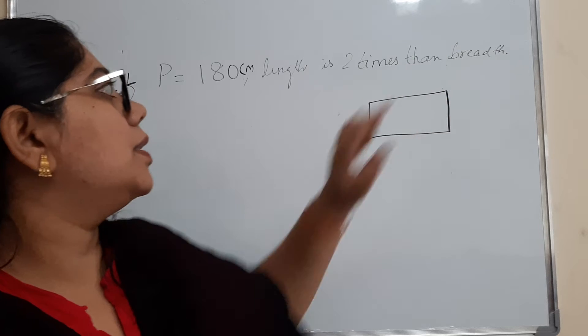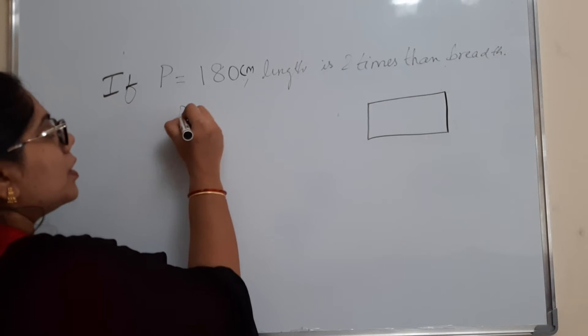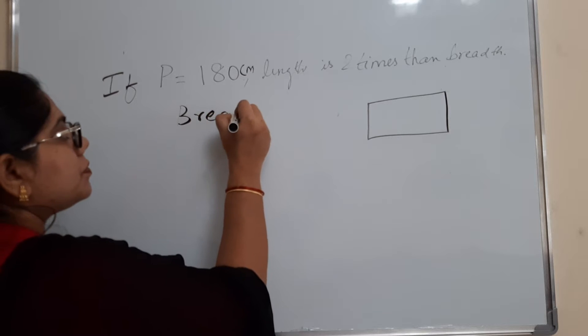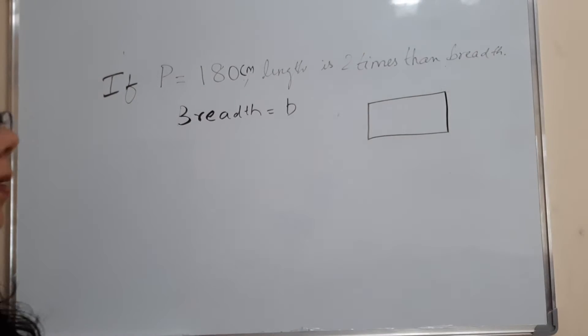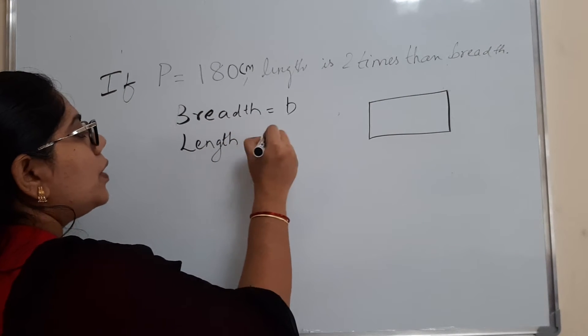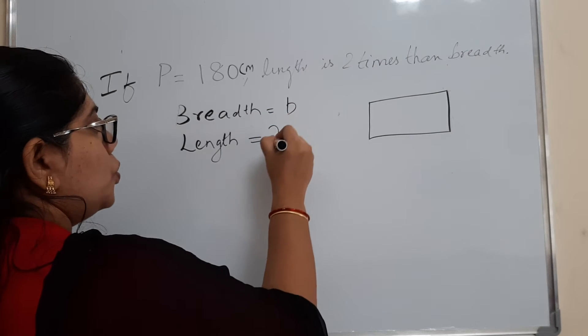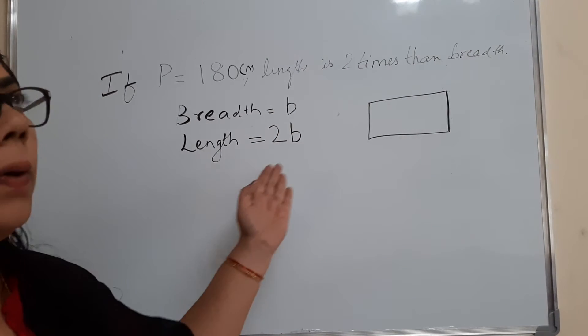The length is 2 times the breadth. So breadth is equal to, take it as B. So length is 2 times, means 2 into breadth, 2 times the breadth, so 2B.